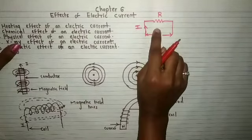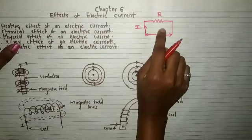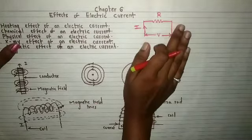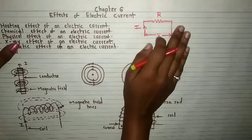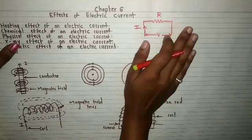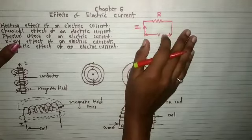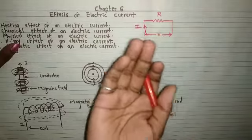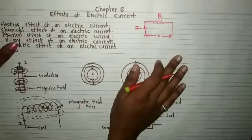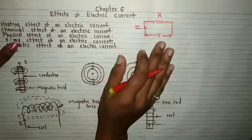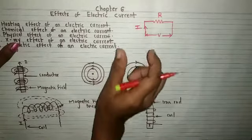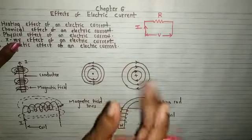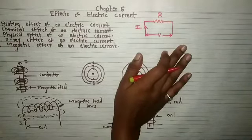Energy is required to overcome the resistance and this is converted into heat. Just remember, whenever the current flows through a conductor, it produces heat. You can take any example — take example of your computers or take example of a charger. They get a little bit heated up. Whenever we use them more, they get heated. This is all about Joule's law.